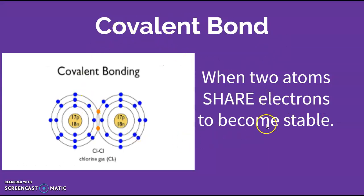So this is one of our vocab words that we're going to kick off the biochemistry unit with: it's a covalent bond. It happens when two atoms share electrons to become stable.